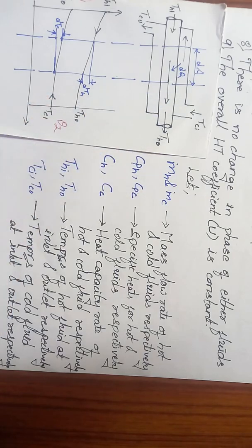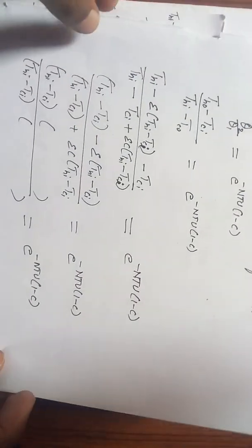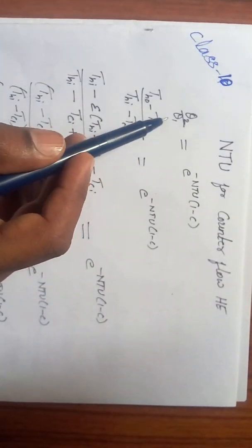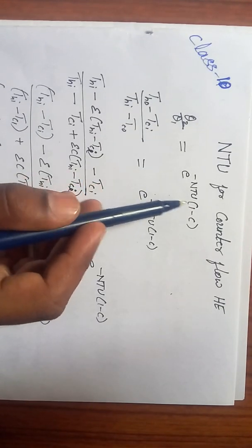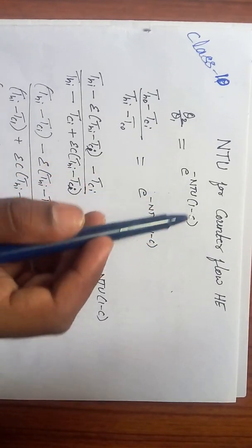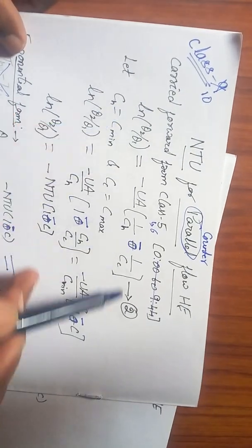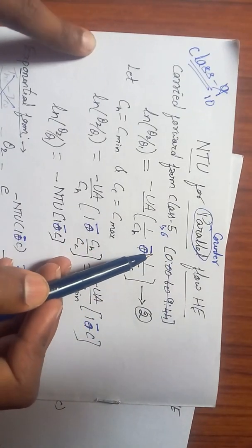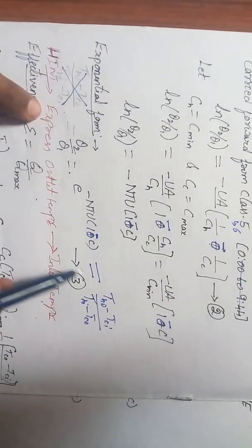Write all this procedure except assumptions and take equation number 2. That was theta 2 by theta 1 equals e power minus U times (1 minus C). This is what you will be arriving at. For more clarification, you can have a look over here. This was equation number 2. For parallel it is plus, for counter it is minus. This minus is carried forward till here, and this is equation number 3.